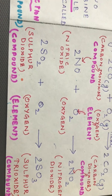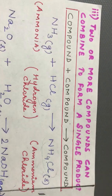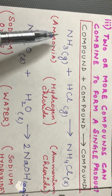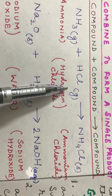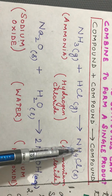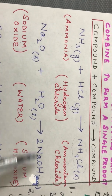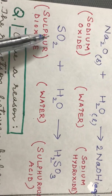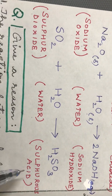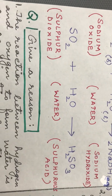The third type of combination reaction is where two or more compounds combine to form a single compound. For example, ammonia — a pungent-smelling gas — combines with hydrogen chloride HCl to form ammonium chloride NH₄Cl. Another example: sodium oxide plus water forms sodium hydroxide. And sulfur dioxide SO₂ plus water forms sulfurous acid H₂SO₃. All these are examples of two compounds combining to form a single compound.